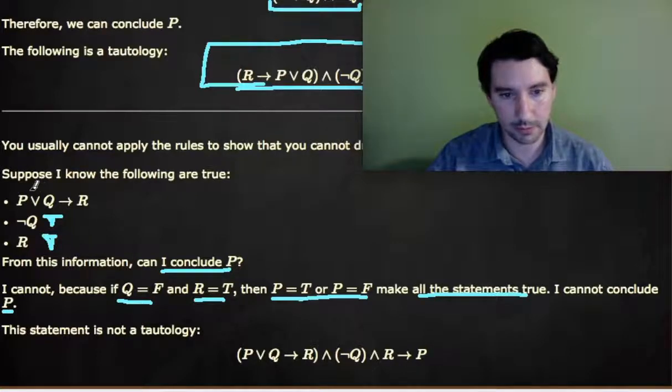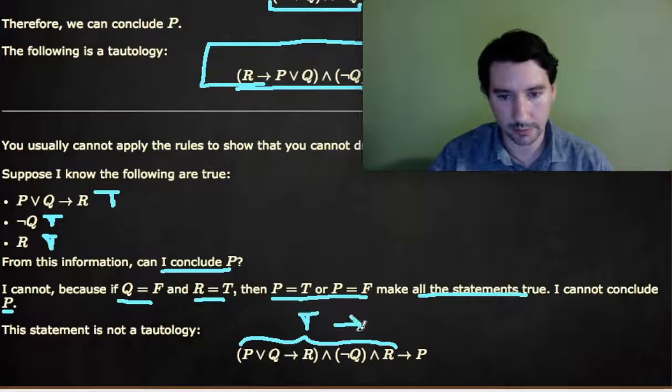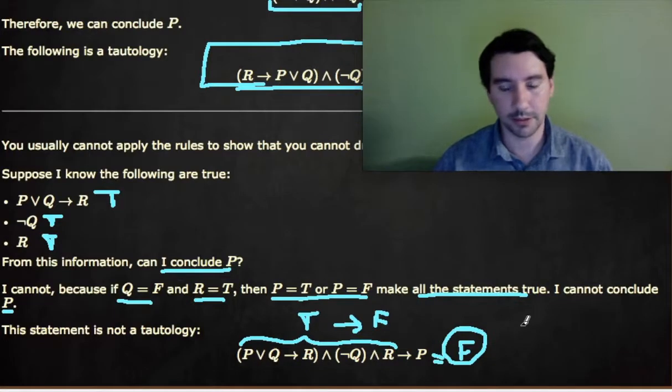And if P is false, then we have false or false implies R, and false implies anything is true, so that makes that true. But we get all of this is true and true and true is true, and that implies P, which could be false. And this whole thing is then false, which means it's not a tautology, because there are conditions that falsify the statement.